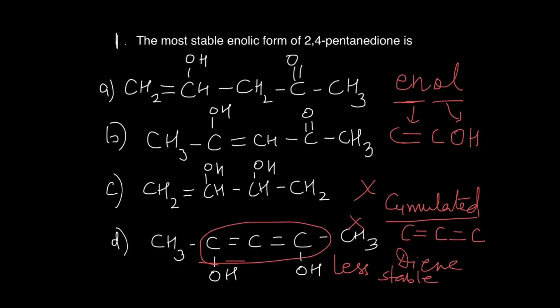And so the two tautomeric forms that 2,4-pentanedione is mostly found in is either A or B. Now let's look at which of the following is the correct answer. Of these, option number B is correct and I will show you why.